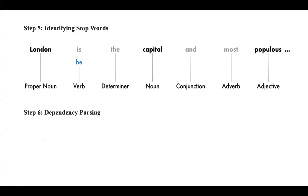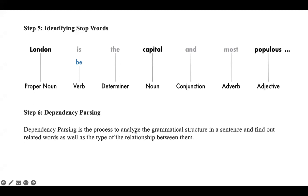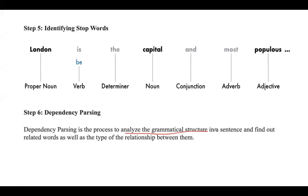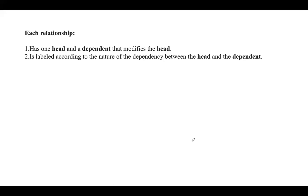The next step is dependency parsing. Dependency parsing will mainly analyze the grammatical structure of a sentence — it will find out related words, the words which are related to each other in that sentence, and it will also find out the type of relationship between the words. The relationship is represented with one head and a dependent that modifies the head, and is labeled according to the nature of dependency between head and dependent.